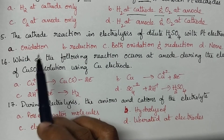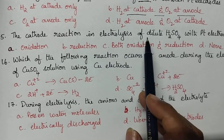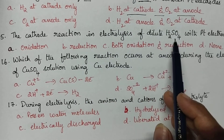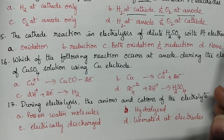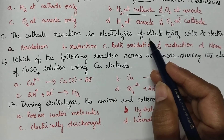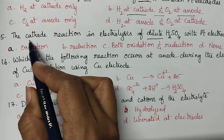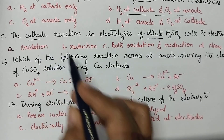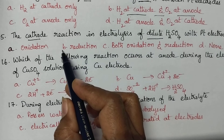The cathode reaction in electrolysis of dilute sulphuric acid with platinum electrodes — irrespective of the electrolyte used, at the cathode, reduction always takes place.